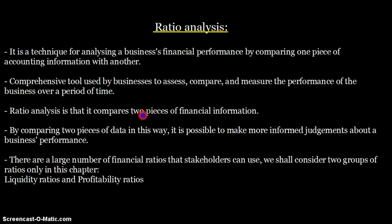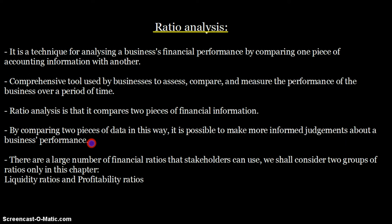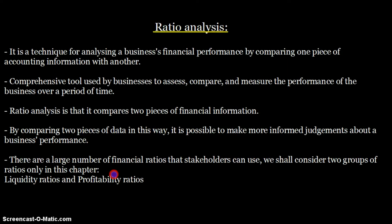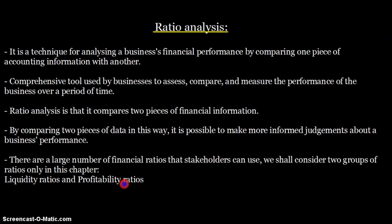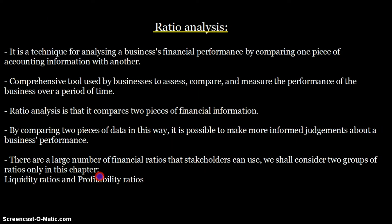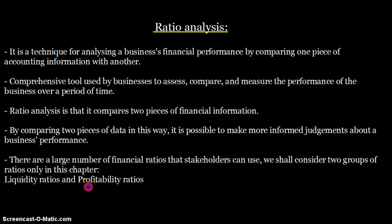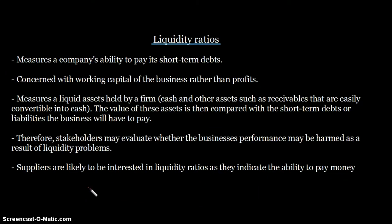Ratio analysis compares two pieces of financial information, making it possible to have more informed judgments about a business's performance. There are a large number of financial ratios stakeholders can use. In this chapter we consider two groups: liquidity ratios and profitability ratios. There are five groups in total, but for AS level we only look at these two. Liquidity ratios include current ratio and quick ratio; profitability ratios include gross profit margin and operating or net profit margin.